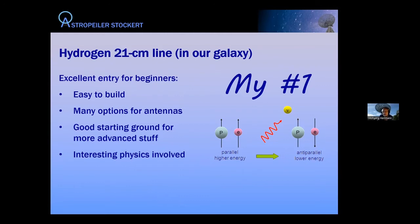As a reminder: the 21-centimeter line of hydrogen. A hydrogen atom consists of a proton and an electron, and the atom can be in two states — the proton and electron spins can be parallel or anti-parallel. The anti-parallel situation has slightly lower energy. Once excited to the parallel state, it drops back to the lower energy level, and the energy difference is emitted as a radio photon at 21-centimeter wavelength, or 1,420 megahertz.